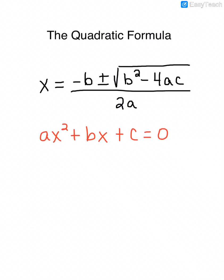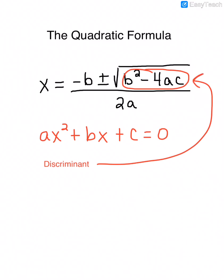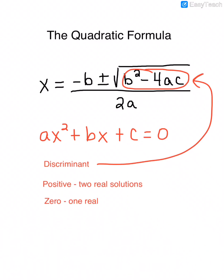We can determine how many and what types of solutions we're going to have by looking at what's called the discriminant. The discriminant is everything under the radical once it's simplified to a single number. If the discriminant is positive, you'll have two real solutions. If the discriminant is zero, you'll have one real solution. And if the discriminant is negative, you'll have no real solutions.